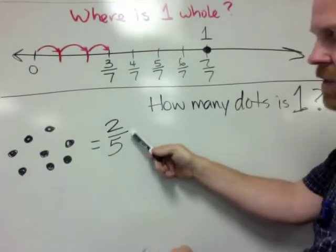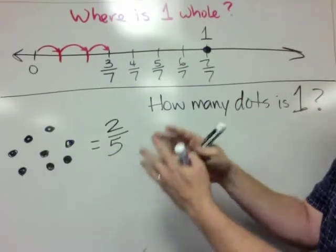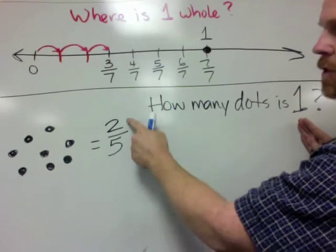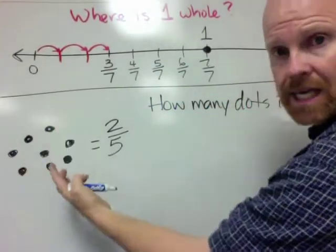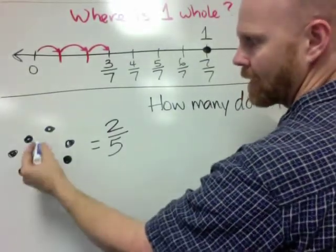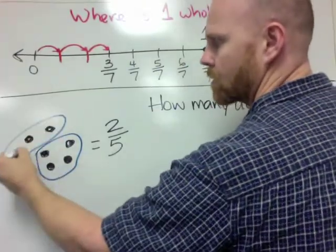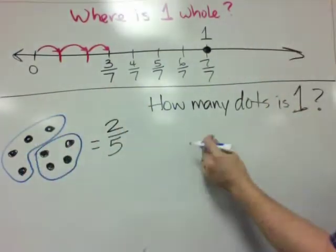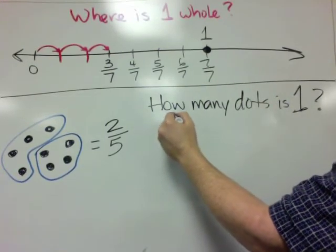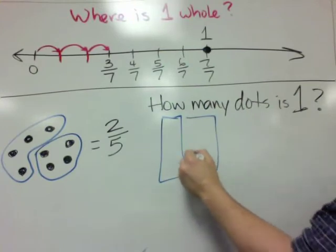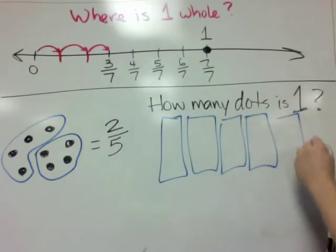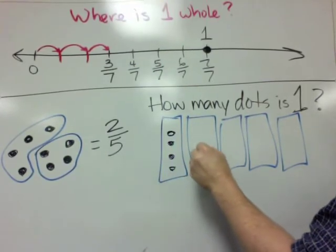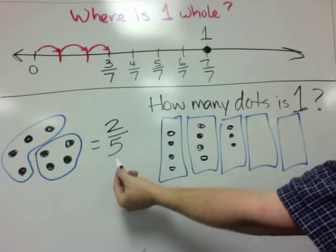This fraction gives us a hint as to what we're looking at. The five says we're supposed to have five equal sets, or five equal parts, to equal one whole. The two means we are currently looking at two equal parts. And we've got eight dots, so we can see there's one set and there's two — those are our two equal sets. It turns out there are four dots in each set.